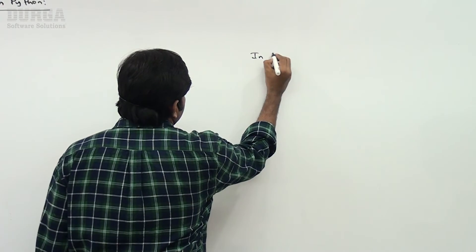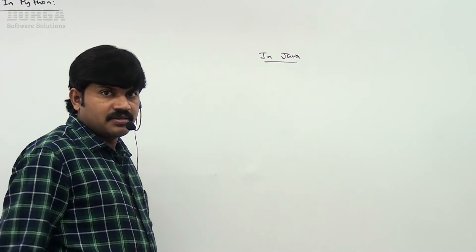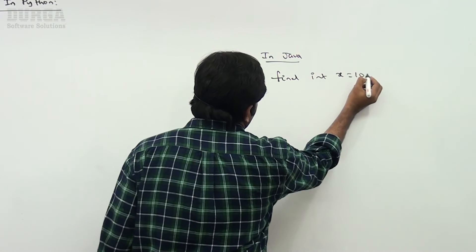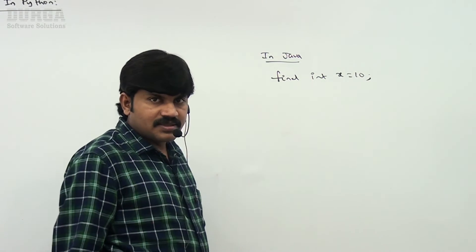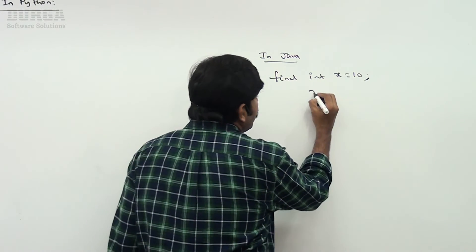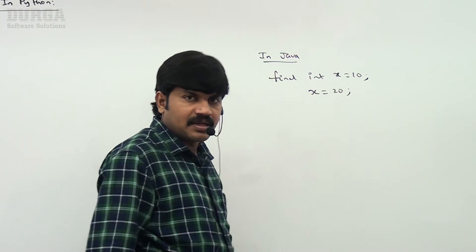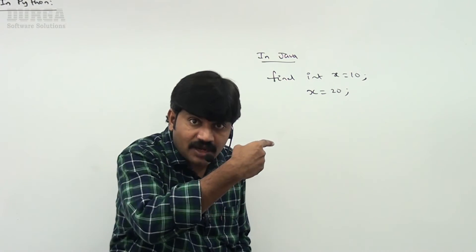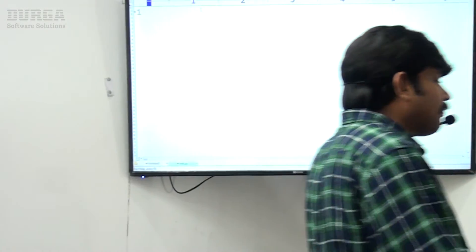For people coming from other languages — constants means a fixed value that can't be changed. In Java, you can declare a constant using the 'final' keyword: 'final int x = 10'. If any person tries to change x, you immediately get an error.